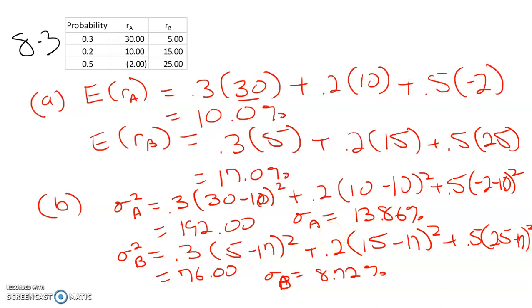So part C asks us to calculate the coefficient of variation. Go to the next page. The coefficient of variation for A is simply the standard deviation of 13.86 divided by the expected return of 10. That's 1.39.